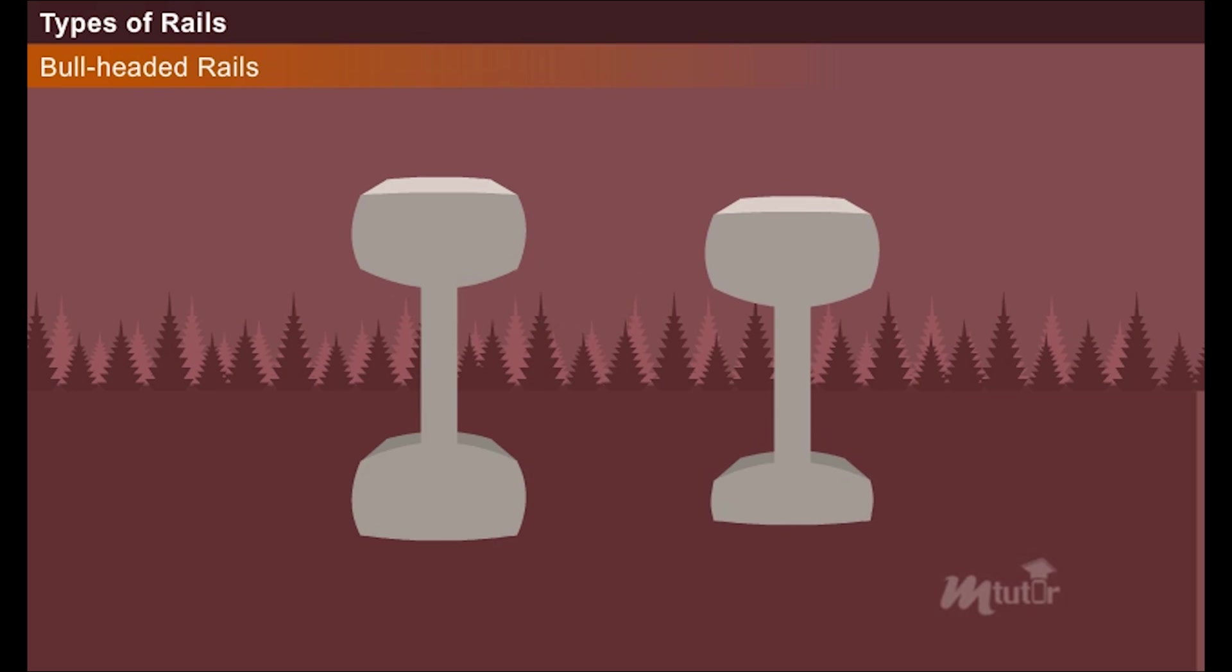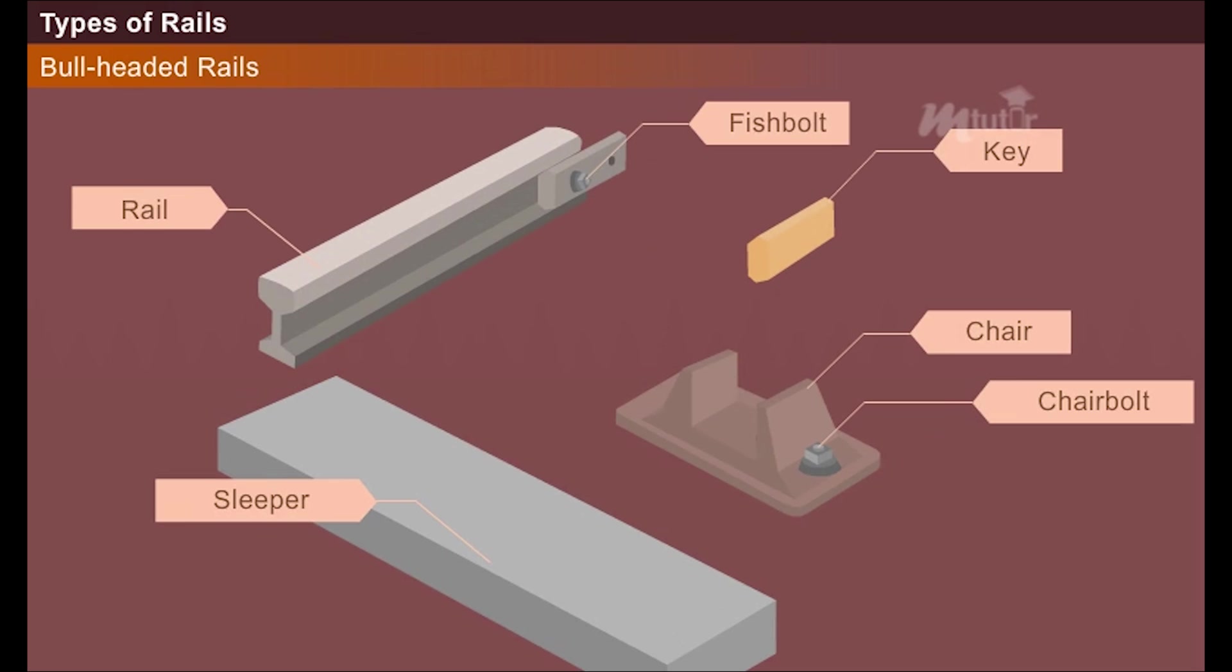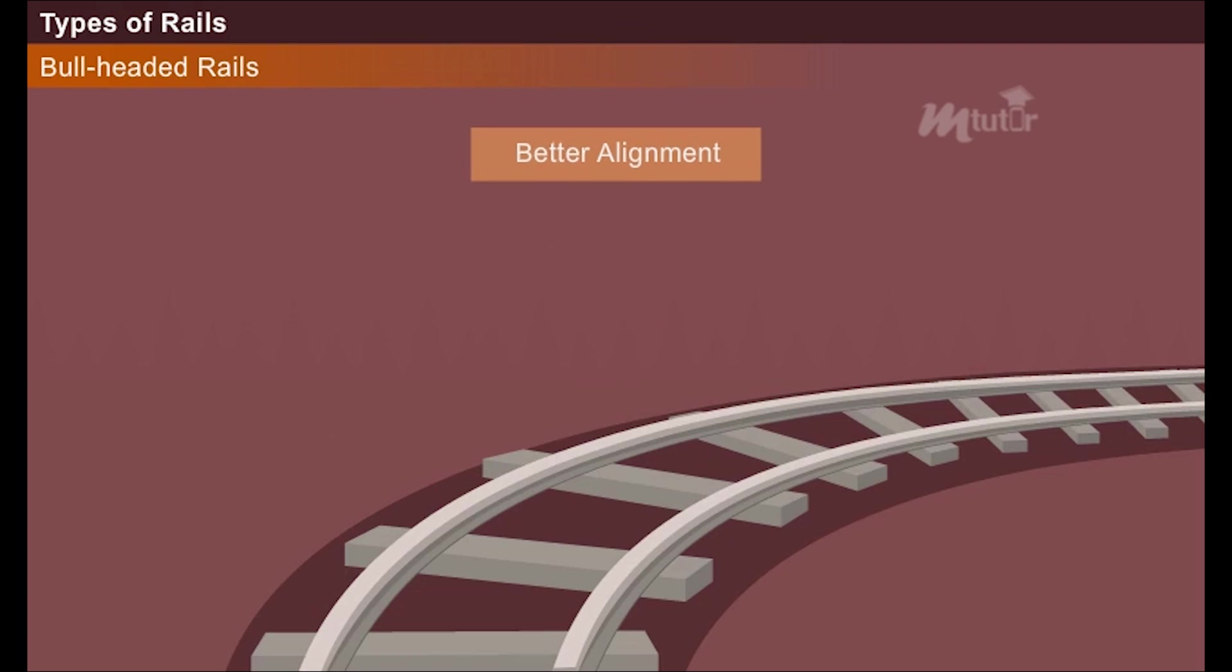Both the double-headed and the bull-headed rails rest on chairs for holding them in position and spread the load to the sleepers. A bull-headed rail offers a better alignment, solid track, and a smooth ride than a flat footed rail.